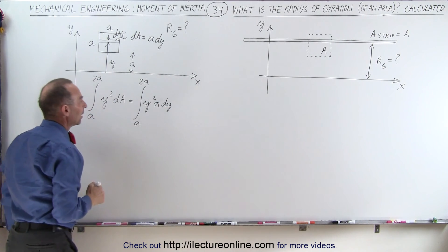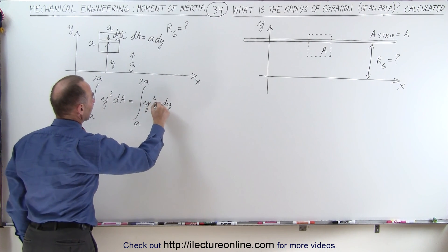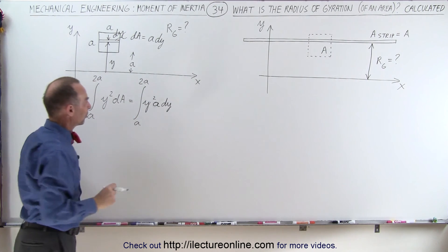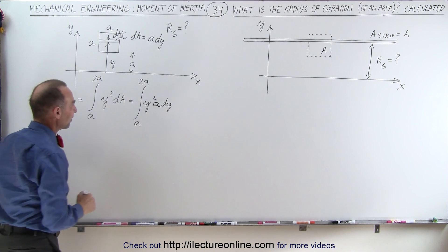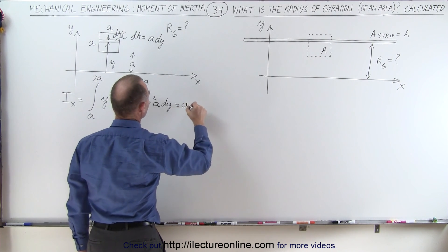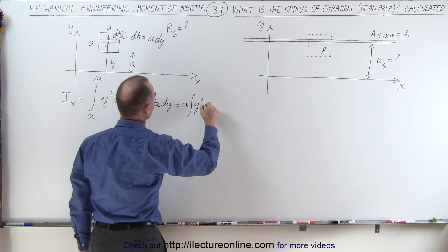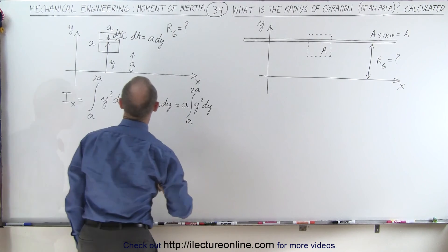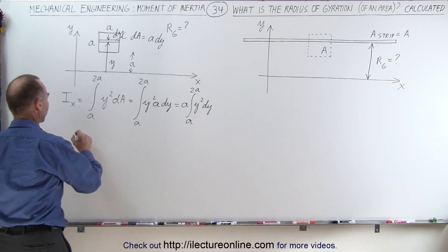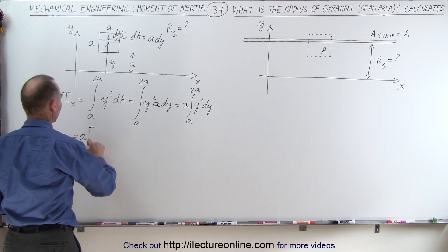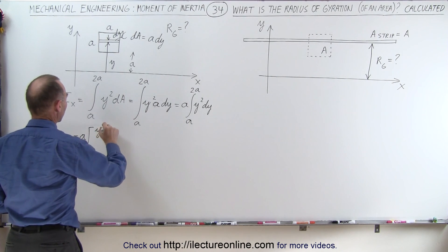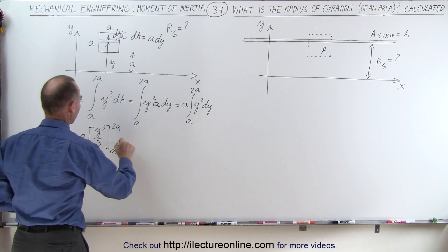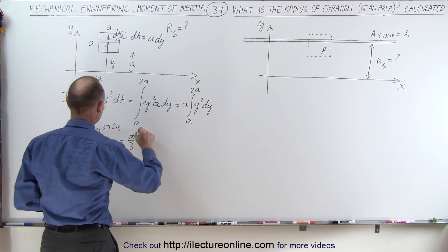Since A is a constant, it can come out of the integral sign. So we can write this as A times the integral of y²·dy from A to 2A. Integrating, this becomes A times y³/3, evaluated from A to 2A.